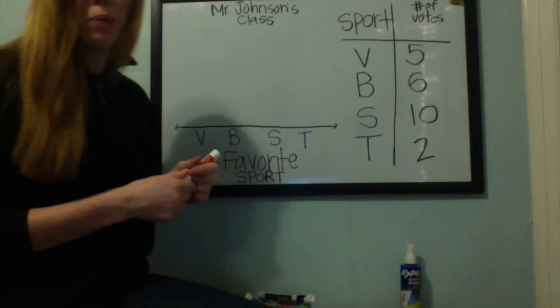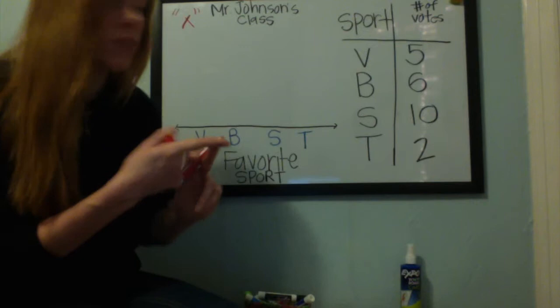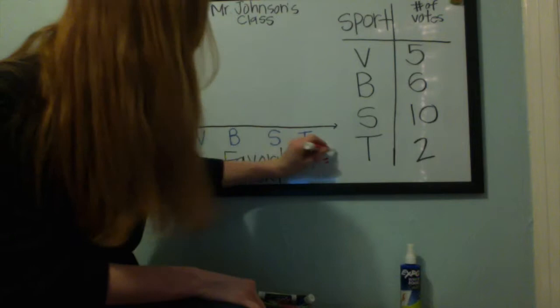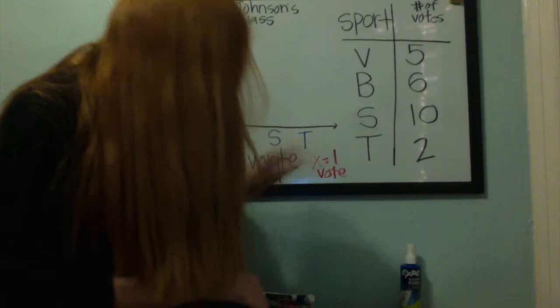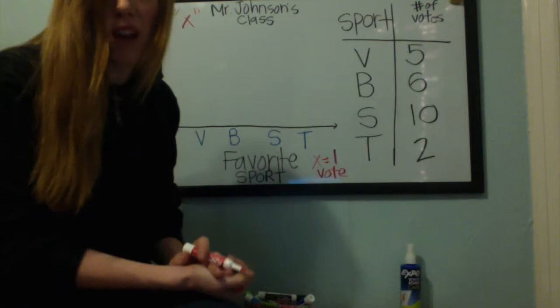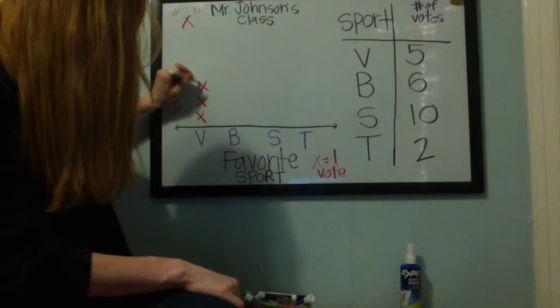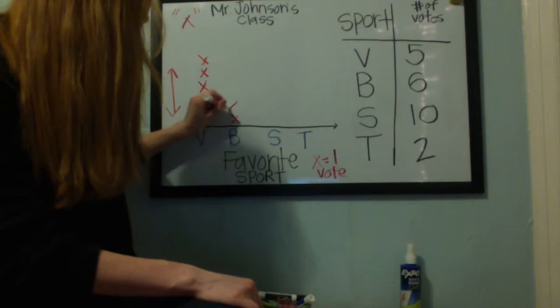Now let's look at a line plot. For that, you're going to use a simple symbol — just an x. The x is going to plot the number of votes. We can label it: x equals one vote. So we're going to look at volleyball, which has five votes. If we know that one vote is x, then five x's equals five votes. With volleyball being five votes, we're going to go vertically — up and down — at five. We see that basketball is six, so we're going to go up six.